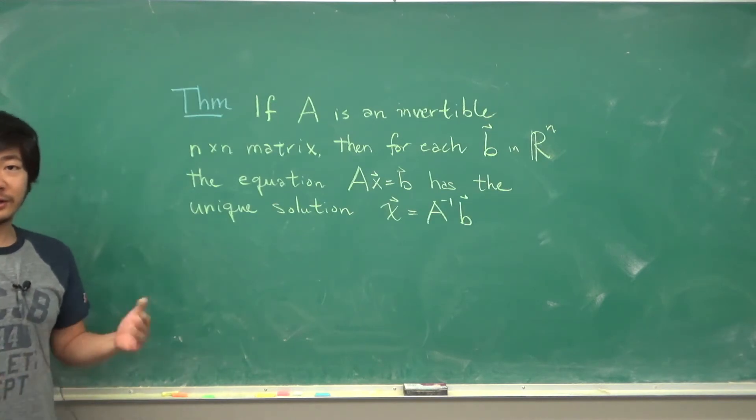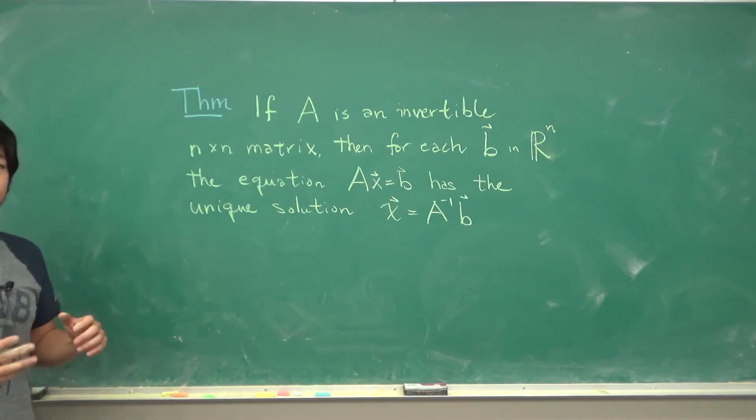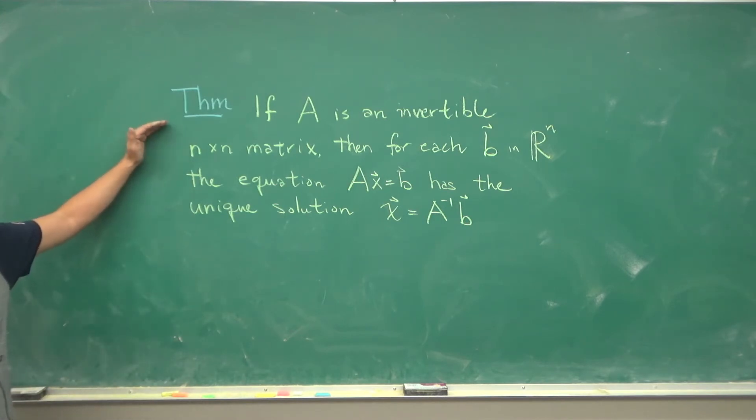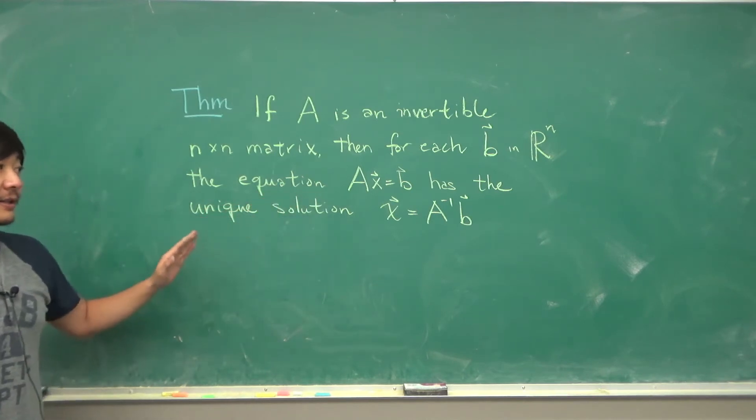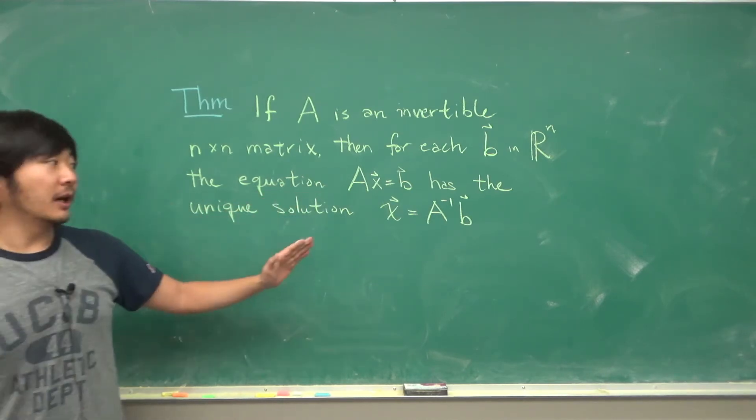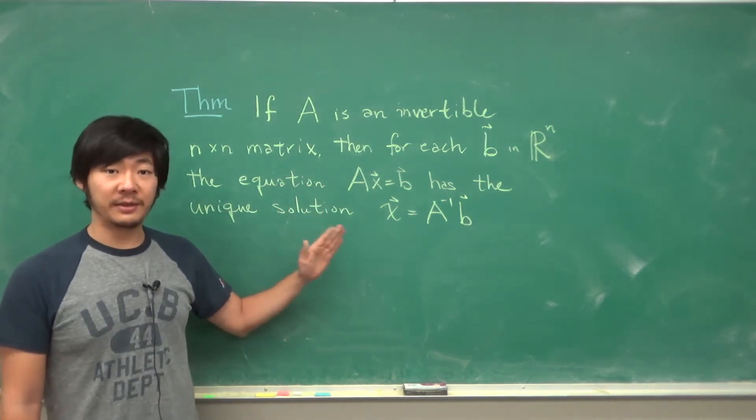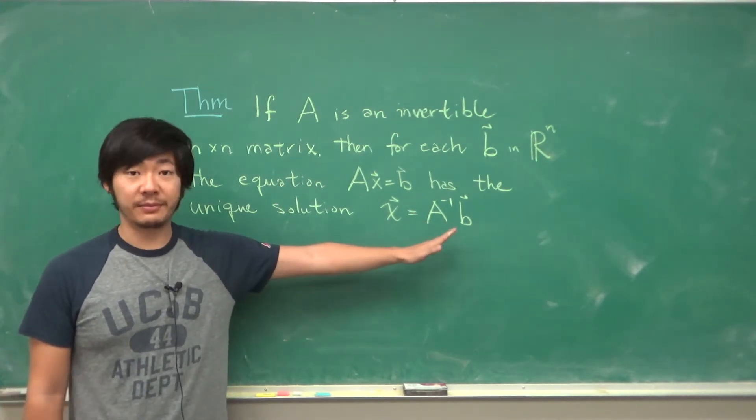An important consequence and also a theorem about a matrix being invertible is that if a matrix A is invertible, then the equation AX equals B has a unique solution and we know what that solution is immediately. X has to be A inverse times B.